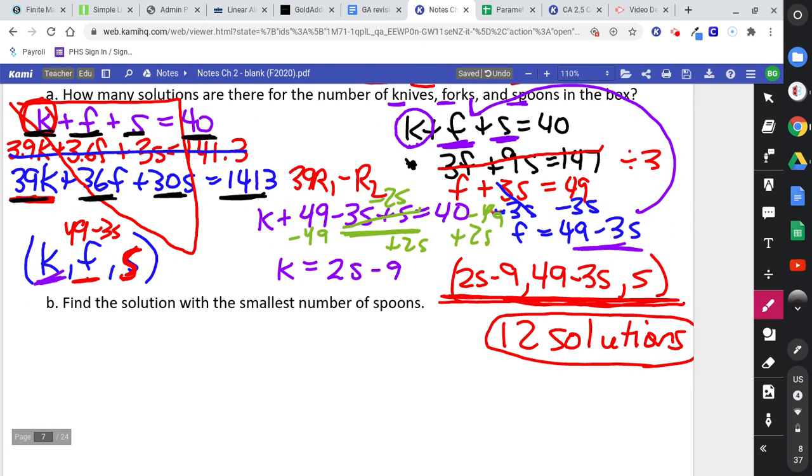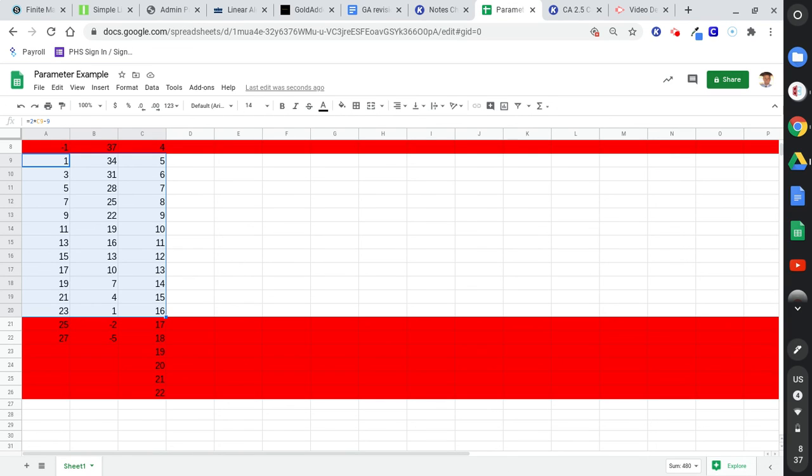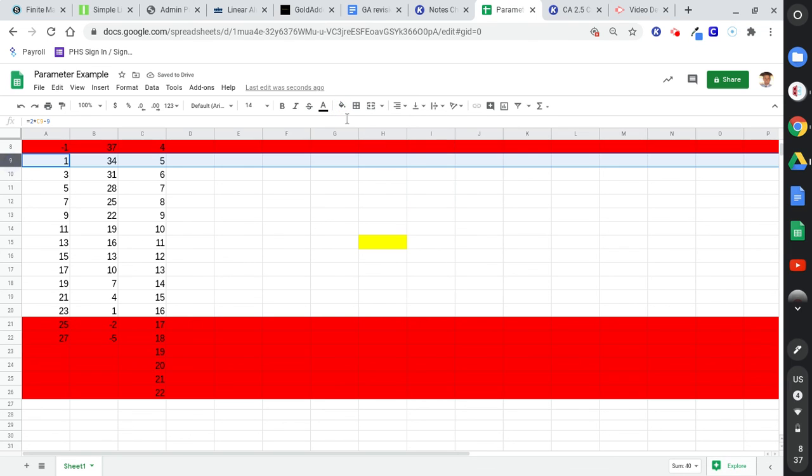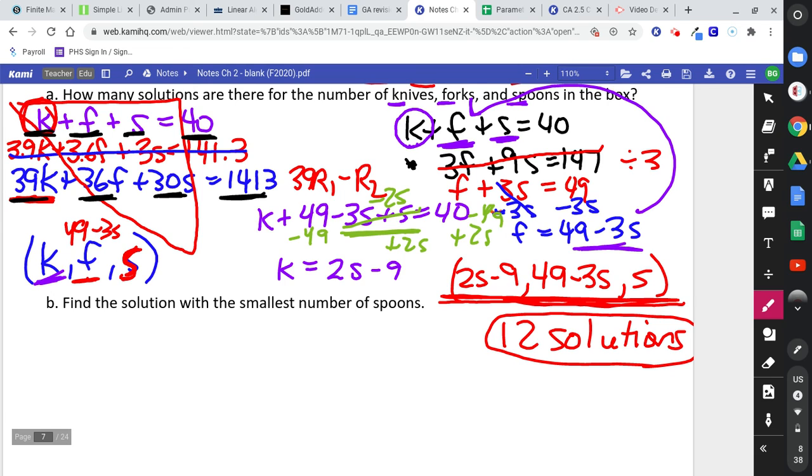We've done the hard part. Now, part B says, find the solution with the smallest number of spoons. That's easy. What's the solution with the smallest number of spoons? Don't think too hard. Oh, row 9. Yeah. You're looking at this, right? 5 spoons is the smallest number of spoons. So, what's the solution? 1, 34, 5. Right? 1 knife, 34 forks, and 5 spoons. So, you'd say 1, 34, and 5, or 1 knife, 34 forks, 5 spoons.